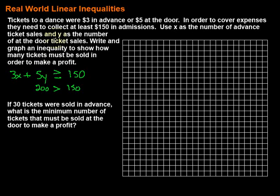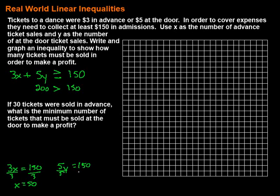Now I've got to graph this, and a good option here would be to use the intercepts. To find the x-intercept, put in zero for y: 3x = 150, divide by 3, we end up with x = 50. Then put in zero for x and solve for y: 5y = 150, divide by 5, we end up with y = 30. So we've got our x-intercept and our y-intercept.